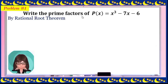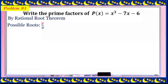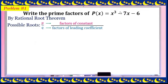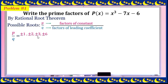We can solve for the factors of this expression by finding the roots using the Rational Root Theorem, as discussed last time. The possible roots are p over q, where p is the factors of the constant. The constant here is negative 6. The factors of 6 are 1, 2, 3, and 6.